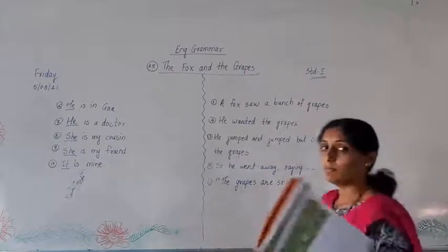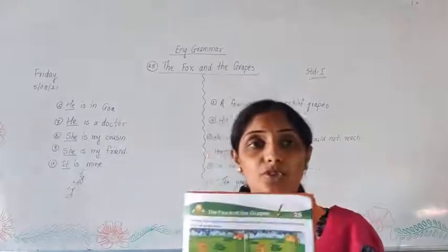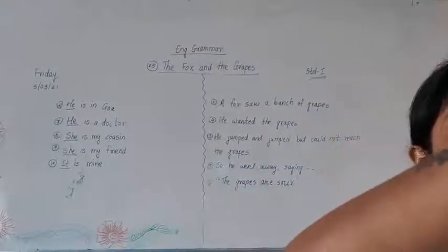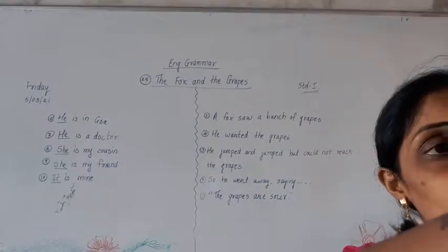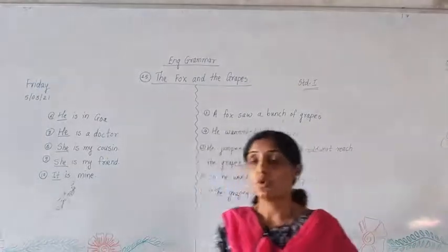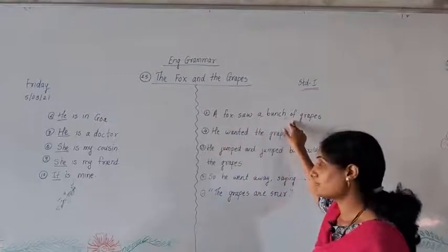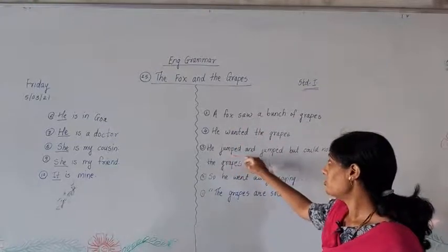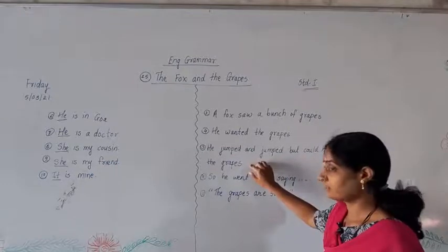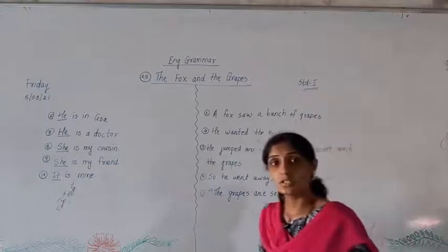In this way, with the help of pictures, what we have done? We have written sentences, correct sentences. With the help of pictures, we have written correct sentences of the story. So, what will be first sentence? A fox saw a bunch of grapes. He wanted the grapes. He jumped and jumped, but could not reach the grapes. So, he went away saying, the grapes are sour.